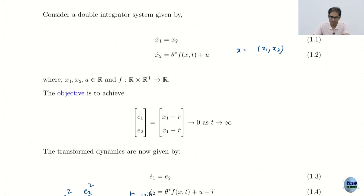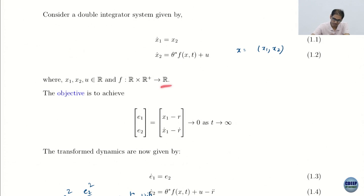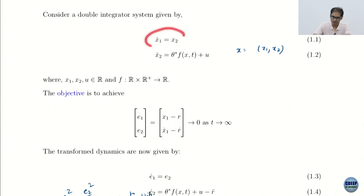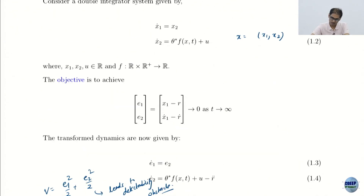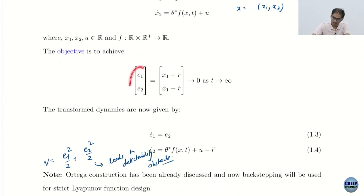Everything is in reals — keeping the presentation simple. F is a map from the state and time to the derivatives. The objective is tracking: signal r, where position follows r and velocity follows r-dot, due to the matching requirement. The trajectory also has to satisfy this — velocity is the derivative of position. For the error dynamics, E₁-dot = E₂ by virtue of the matching condition, and E₂-dot = x₂-dot minus r-double-dot.